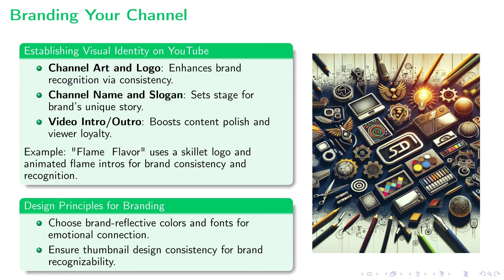Success on YouTube is synonymous with strong branding, a prime example being Flame and Flavor — a channel consistent in its visual identity. Their skillet logo, combined with the fiery intro, exudes the essence of their brand, the first stepping stone towards connecting with their audience. The channel name and slogan frame the brand narrative, letting viewers know what awaits them, crafting an engaging storyline and paving a clear path for the viewer journey.